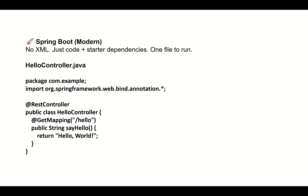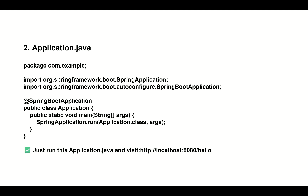In Spring Boot, no XML is required — just code. With starter dependencies, you create HelloController.java, define the package, import annotations, add the @RestController annotation, create the public class HelloController, and add the @GetMapping annotation with the endpoint /hello. Much less code is required. You also need an Application.java main file with the @SpringBootApplication annotation and a main method that calls SpringApplication.run(). Then you access http://localhost:8080/hello and it prints whatever you want.